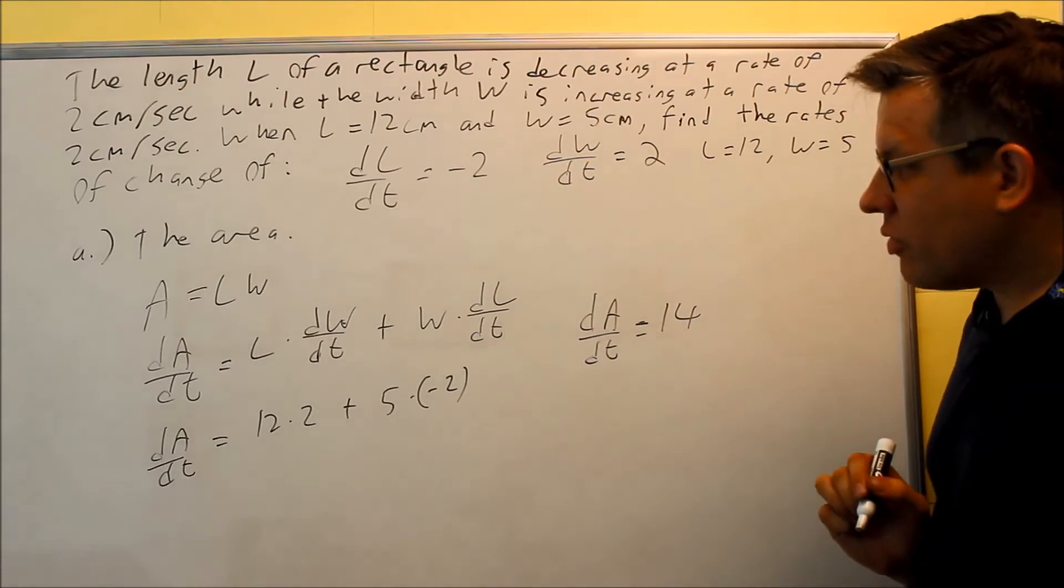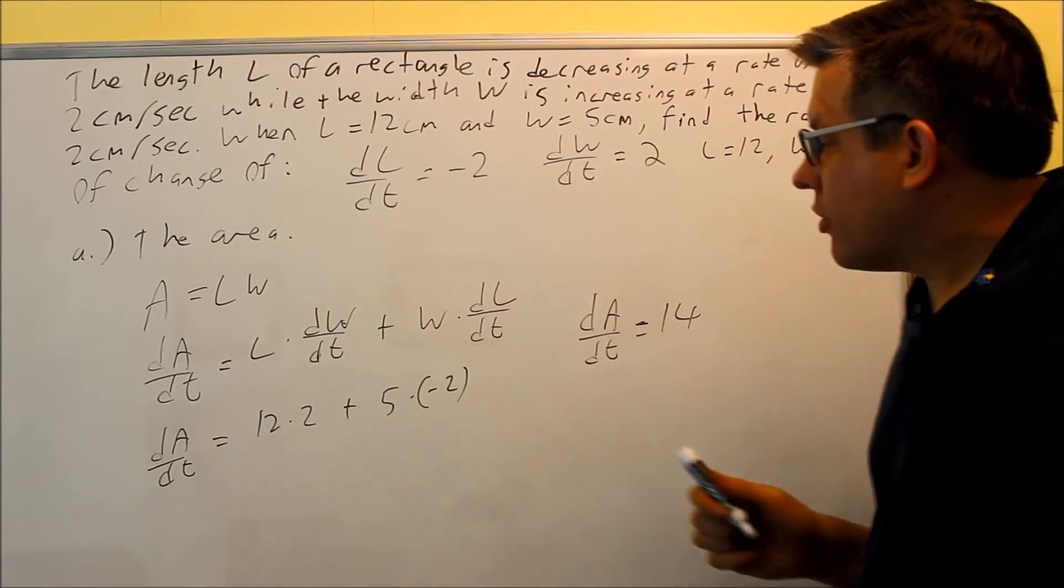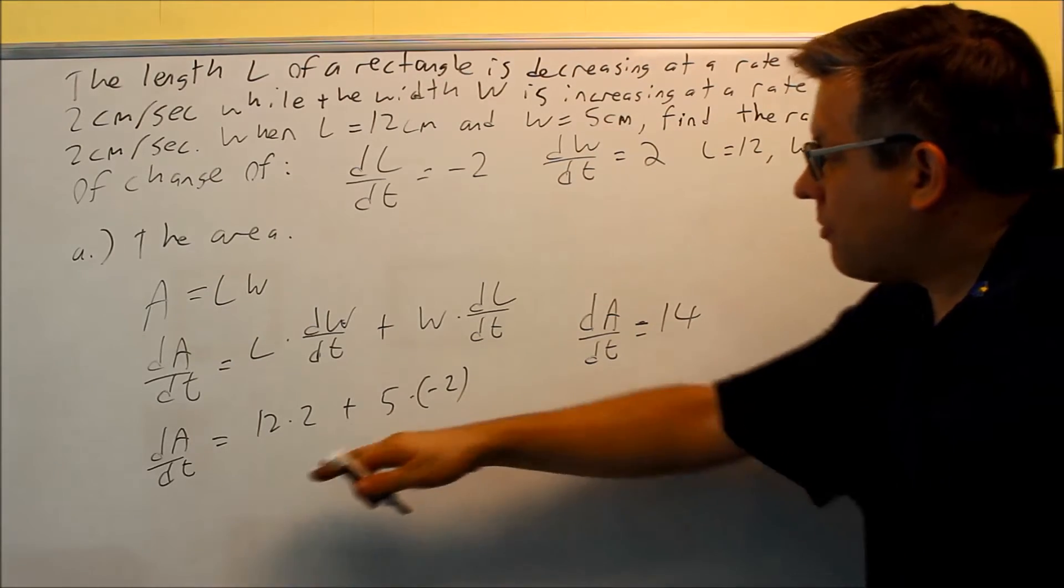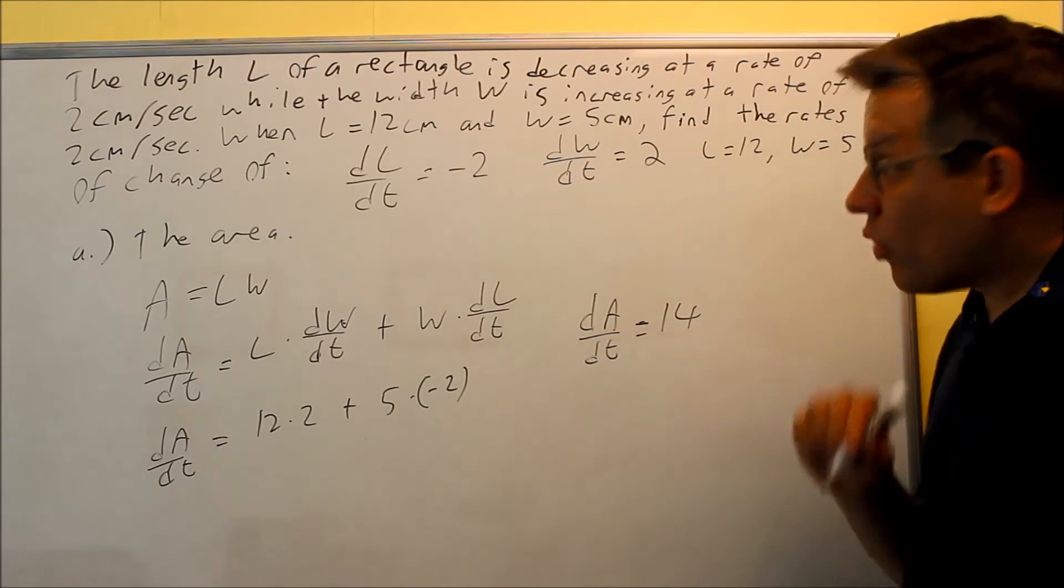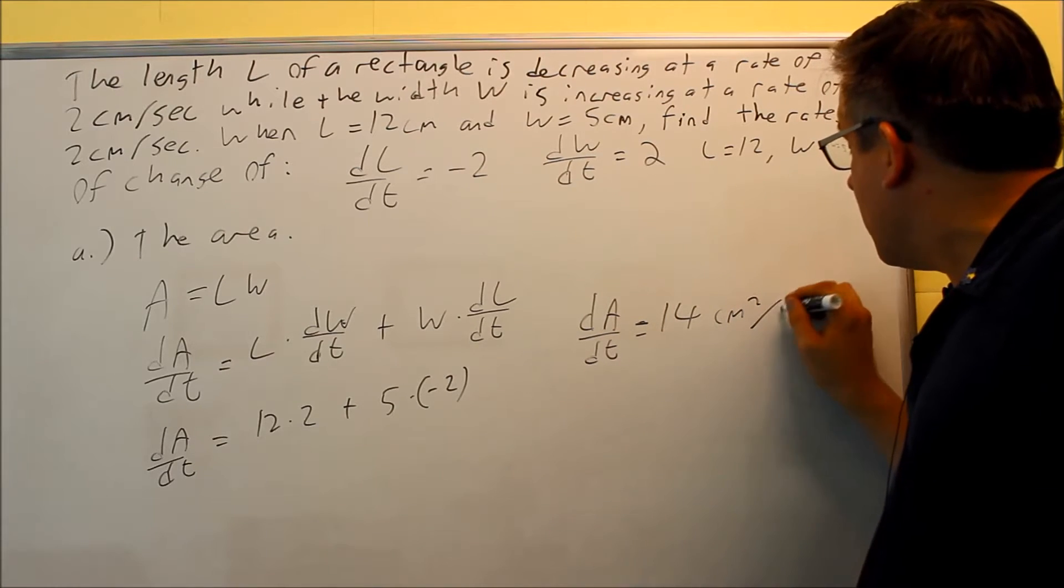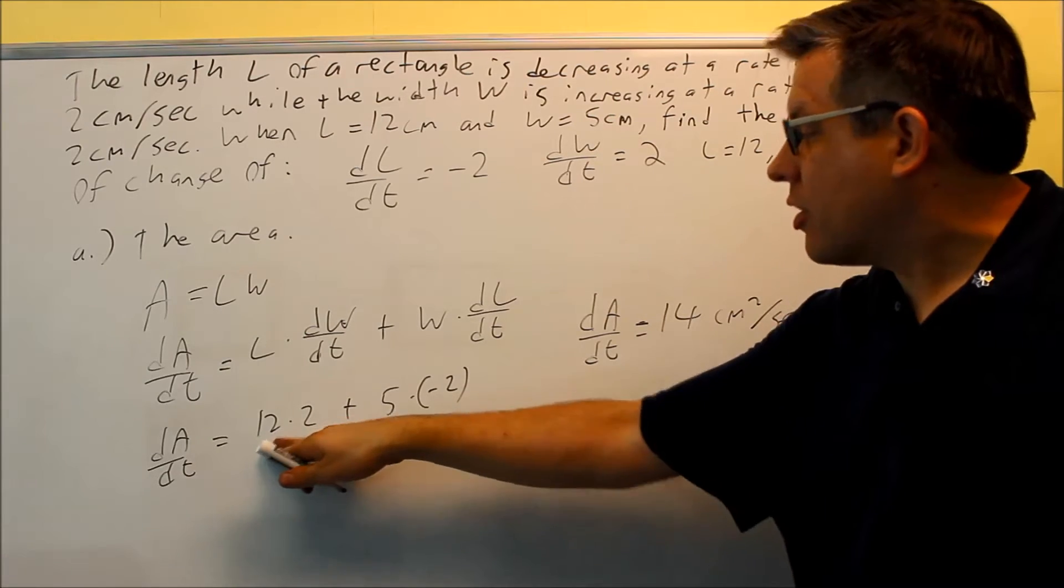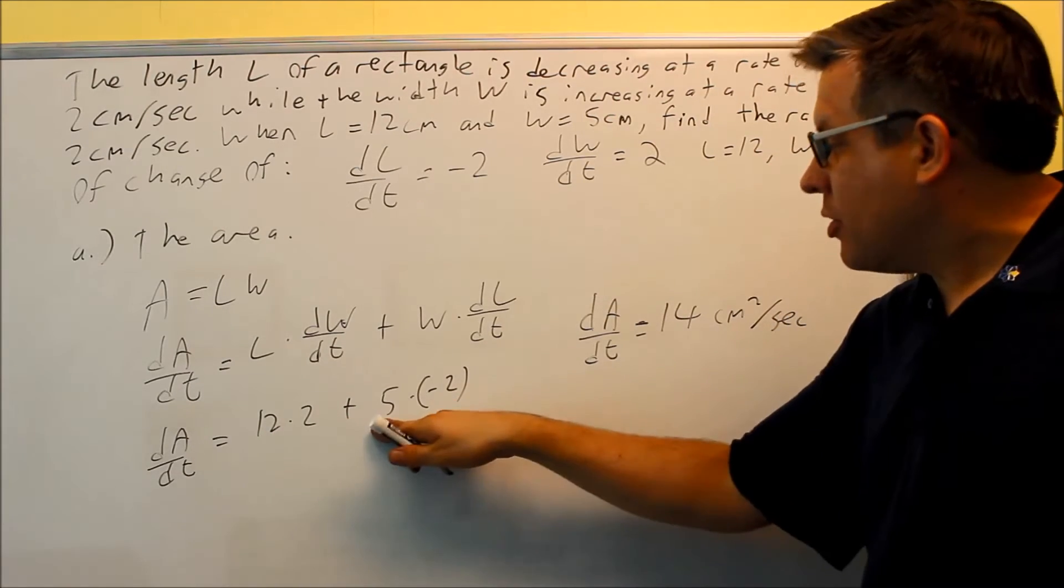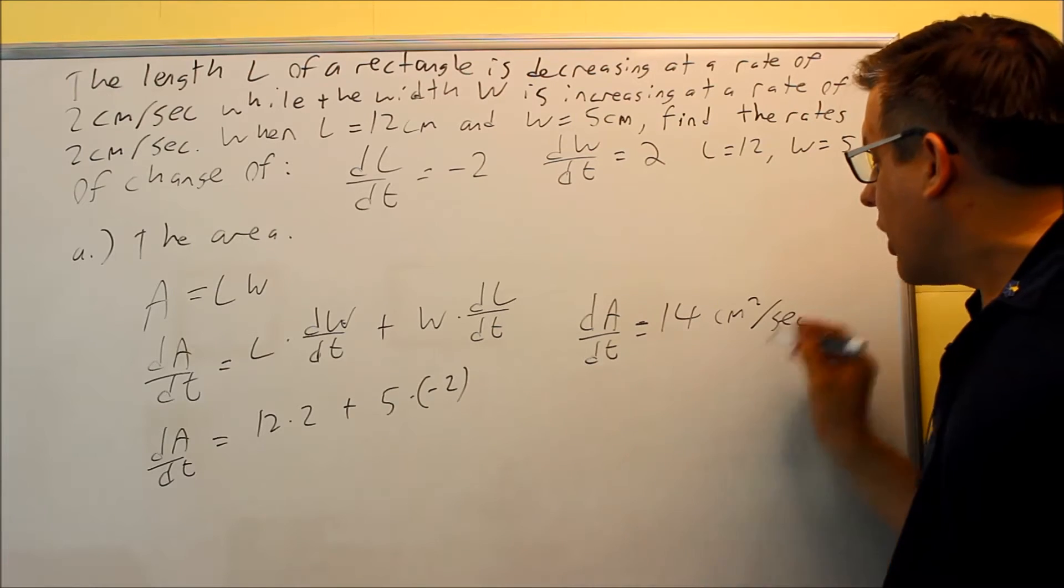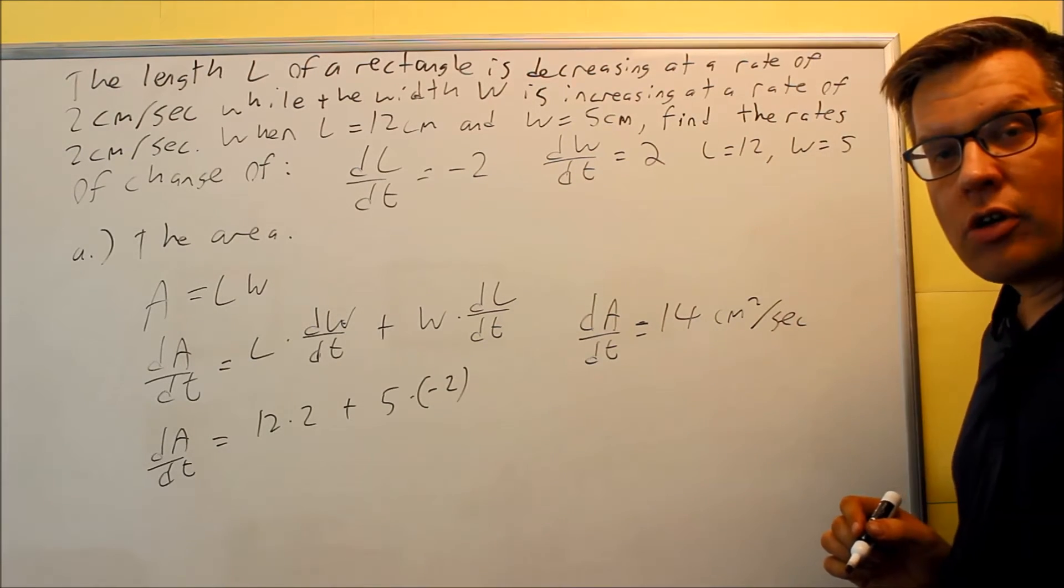What units do we have here? I'm multiplying these two together here. When you have an area, you're using square units, and because we're dealing with centimeters, it's going to be square centimeters per second. Because you're multiplying 2 centimeters times centimeters per second, centimeters times centimeters per second, that centimeters squared you get when you multiply each of those, that's going to be your answer for part A.